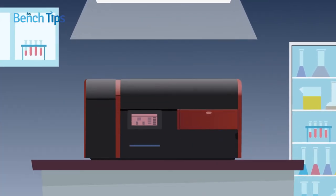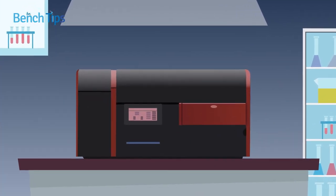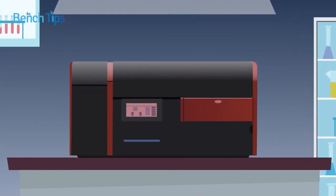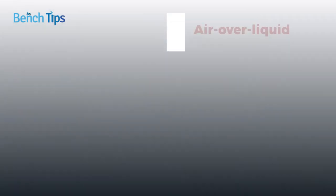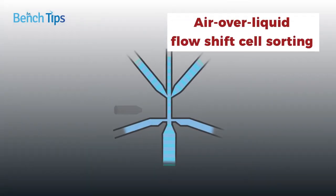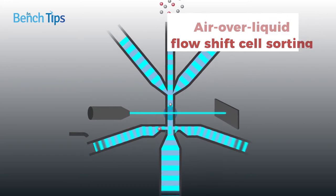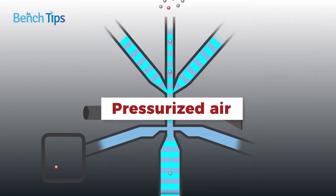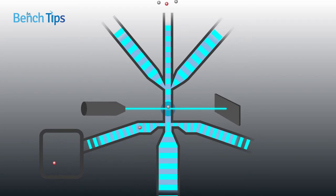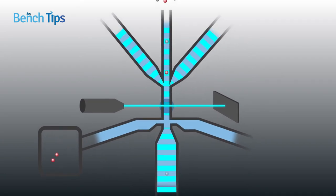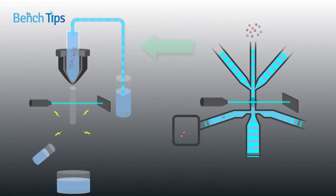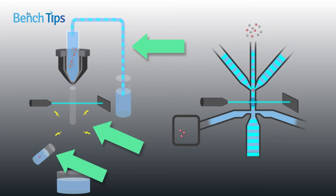Various alternative technologies have been developed to overcome the limitations of conventional cell sorting. One promising approach is air over liquid flow shift cell sorting, which differs mainly from conventional techniques in that it uses pressurized air to generate a short liquid pulse for directing the target cells into the collection reservoir. By eliminating all of the damaging steps involved in conventional cell sorting, flow shift cell sorting has been proven to reduce SIX in many different cell types.